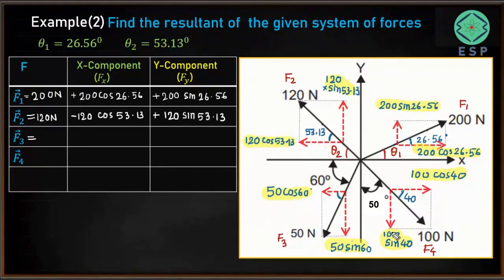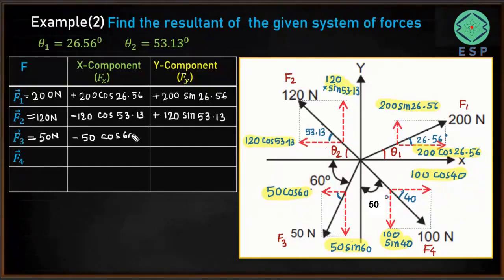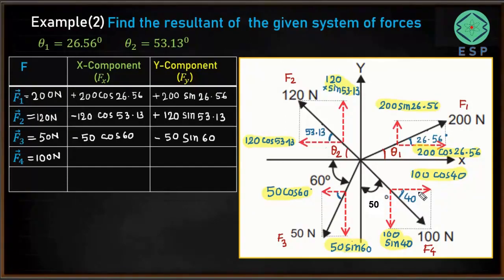For F3 (50 Newton), the x component acts towards the negative x direction, so it is minus 50 cos 60. The y component acts downward — negative y direction — so it is also negative: minus 50 sin 60. For F4 (100 Newton), the x component is in the positive x direction, so it is +100 cos 40, and the y component acts in the negative y direction, so it is negative.